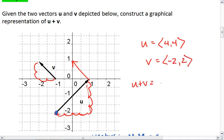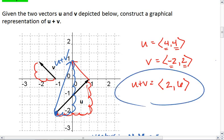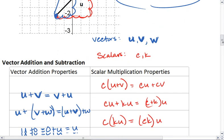This means that u plus v is going to be 4 plus a negative 2, so we get 2. And then 4 plus 2, which is 6. And indeed, when we draw out u plus v, we go 1, 2, and then 1, 2, 3, 4, 5, 6. So we just add the respective components of each vector.